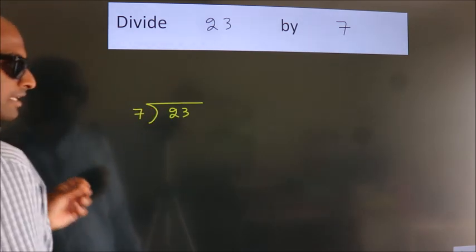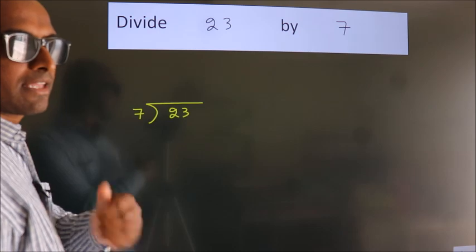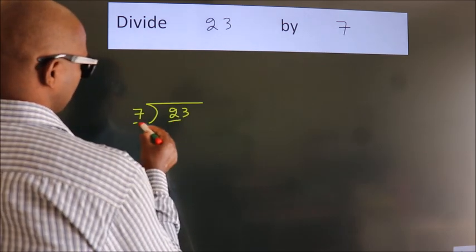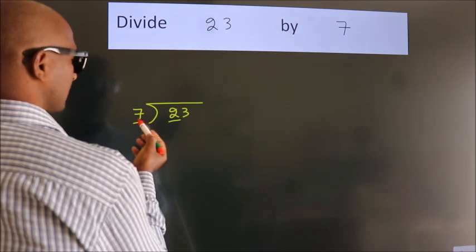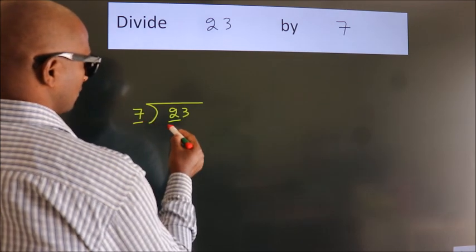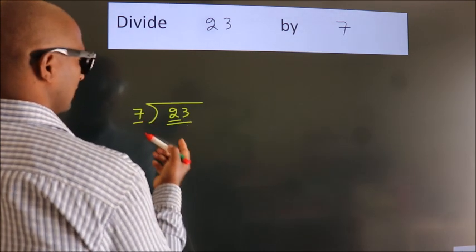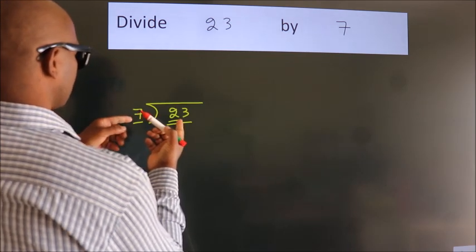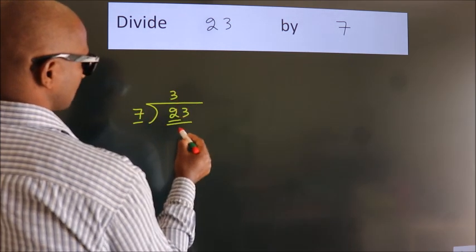This is your step 1. Next, here we have 2. Here 7. 2 is smaller than 7, so we should take 2 numbers: 23. A number close to 23 in the 7 table is 7 threes, 21.